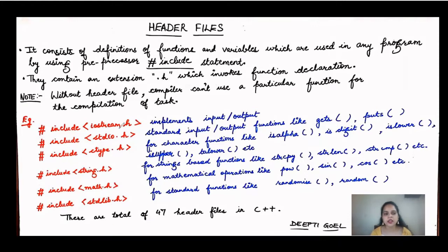The syntax of writing the header file is: hash include iostream.h. 'IO' stands for input/output — 'I' is for input, 'O' is for output, and 'stream' is the window where bytes are written. It implements input and output. If you are not including iostream.h, the functions will not be executed.